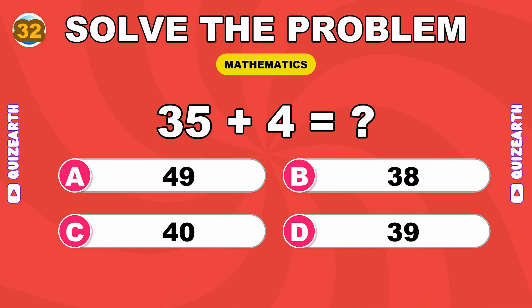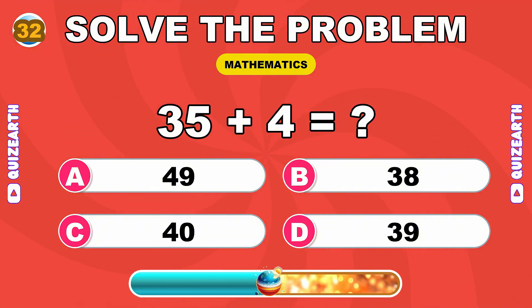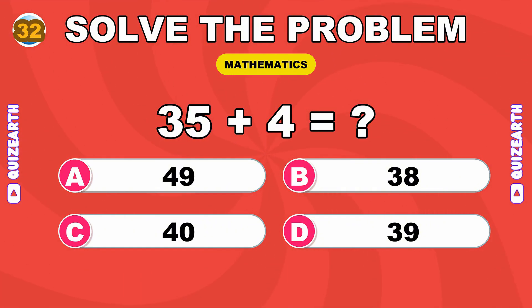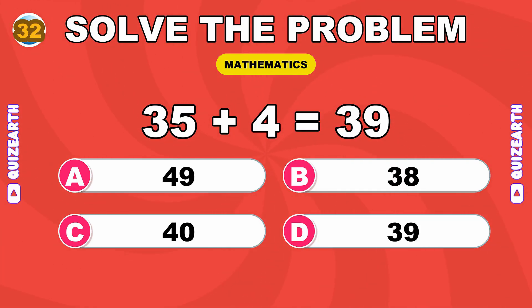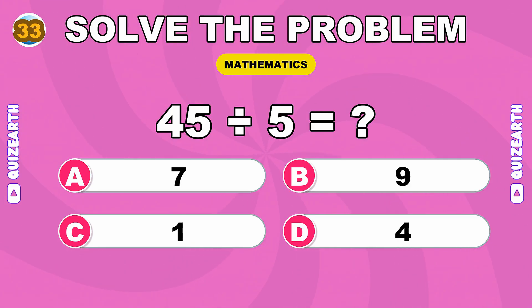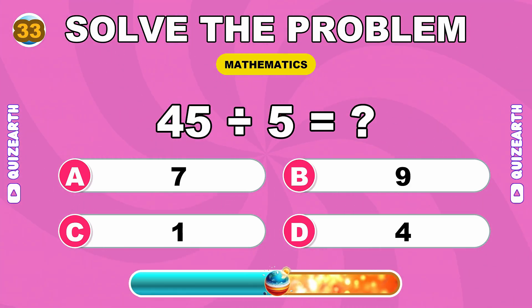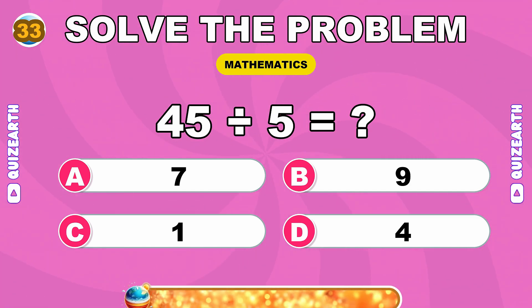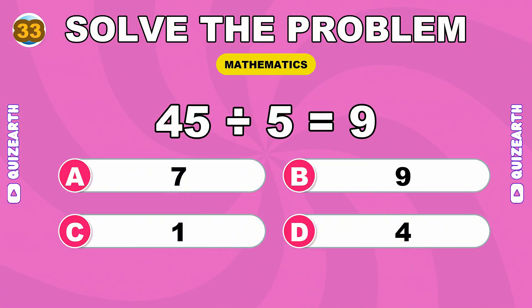How much is 35 plus 4? Killing it, 39. What do you get when you divide 45 by 5? Legendary speed, 9.